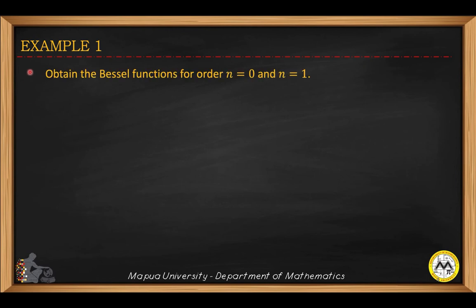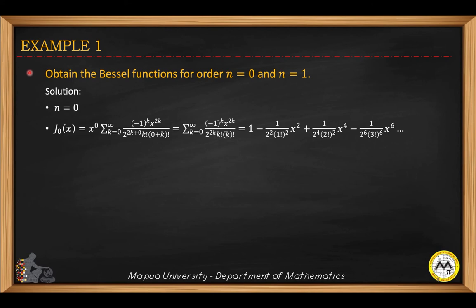We will obtain the Bessel functions for order n equals zero and n equals one. For J sub zero, we replace n by zero in the general formula, giving x to the zero here. The denominator becomes 2 raised to 2k plus zero, times k factorial, times (zero plus k) factorial. This simplifies to negative 1 raised to k times x raised to 2k, all over 2 raised to 2k times k factorial times k factorial.